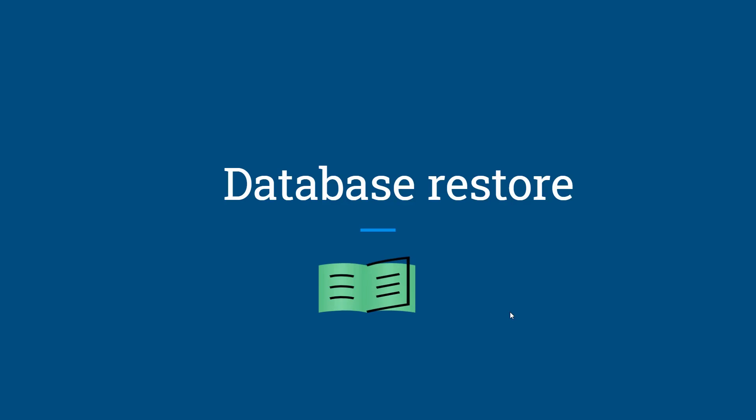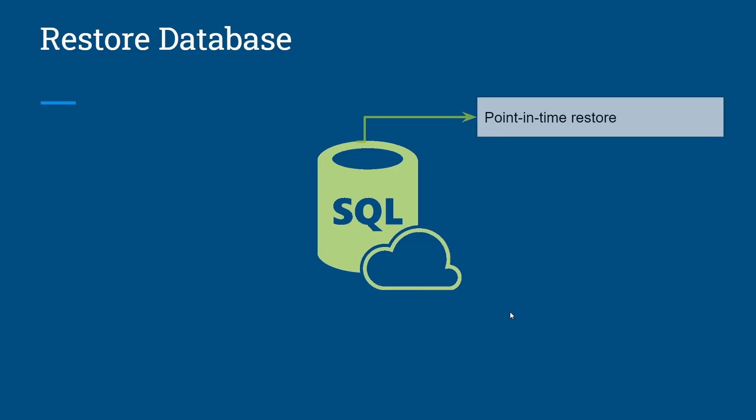Now let's discuss the multiple options. The first option is point-in-time restore. Point-in-time restore is a self-service capability allowing you to restore your database from backup at any point in time. It accesses your database backups depending on your retention period — 7 days for Basic and 35 days for Standard and Premium tiers. In a point-in-time restore, you always create a new database. In Azure SQL, there is no option to override your existing database while performing the restore activity.